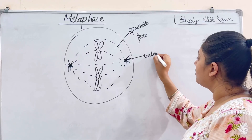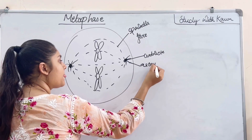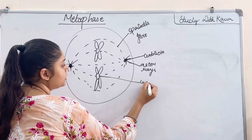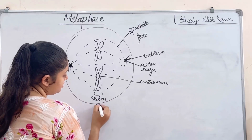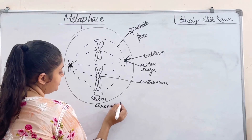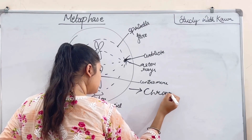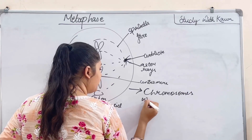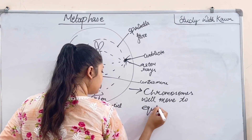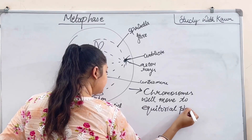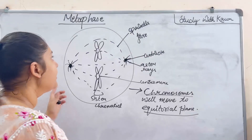Looking at the diagram: this is the centriole, this is the aster, this is the centromere, and this is the nuclear cell membrane. The spindle fiber goes from one pole to the other, joining the chromosomes. In metaphase, chromosomes move to and lie on the equatorial plane.